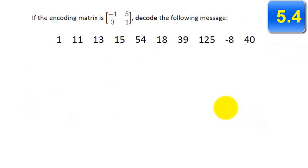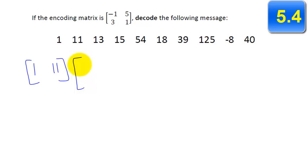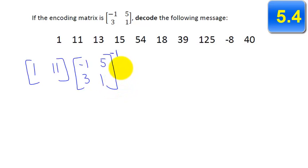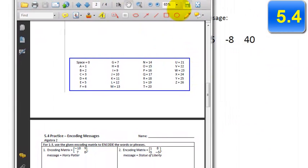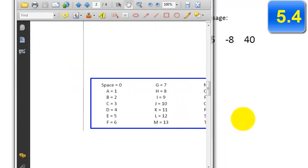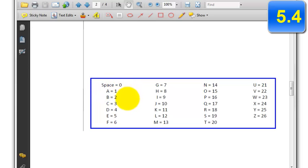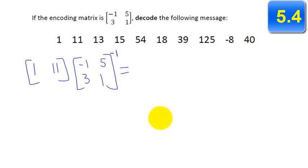Decoding is similar but slightly different. You still take two numbers at a time from the encoded message. But instead of using the encoding matrix directly, you use its inverse. So you take the matrix that was used to encode, for example negative 1, 5, 3, 1, and use its inverse to multiply against your encoded number pairs. When you multiply those out, you get numbers back that correspond to the alphabet. A is 1, space is 0, and so forth. Take whatever numbers come out of your answer and convert them back into letters, and that's it.